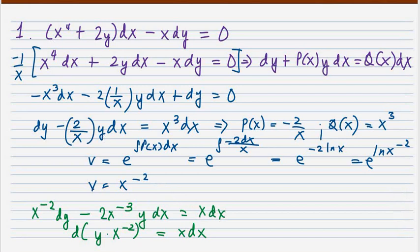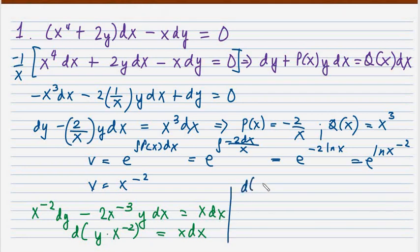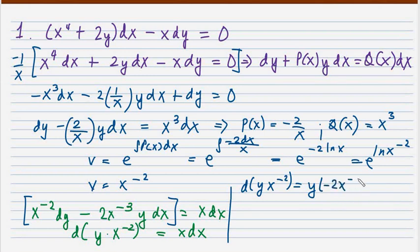Let us verify that d(y · x^(-2)) equals the left side. The differential of y · x^(-2) is: negative 2x^(-3) dx plus x^(-2) dy. We can see this matches: x^(-2) dy corresponds to that term, and negative 2x^(-3) y dx corresponds to this term.